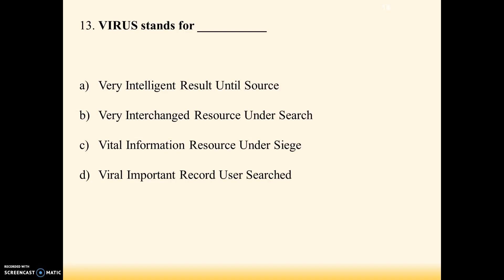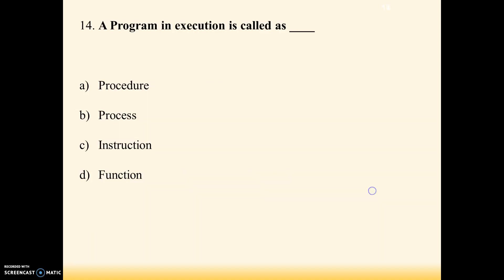Next question: what is the full form of VIRUS? Options are — A: very intelligent result until source, B: very interchanged resource under search, C: vital information resource under siege, D: viral info important record user search. Answer is C — vital information resource under siege. You should remember this because it may be asked in different competitive examinations.